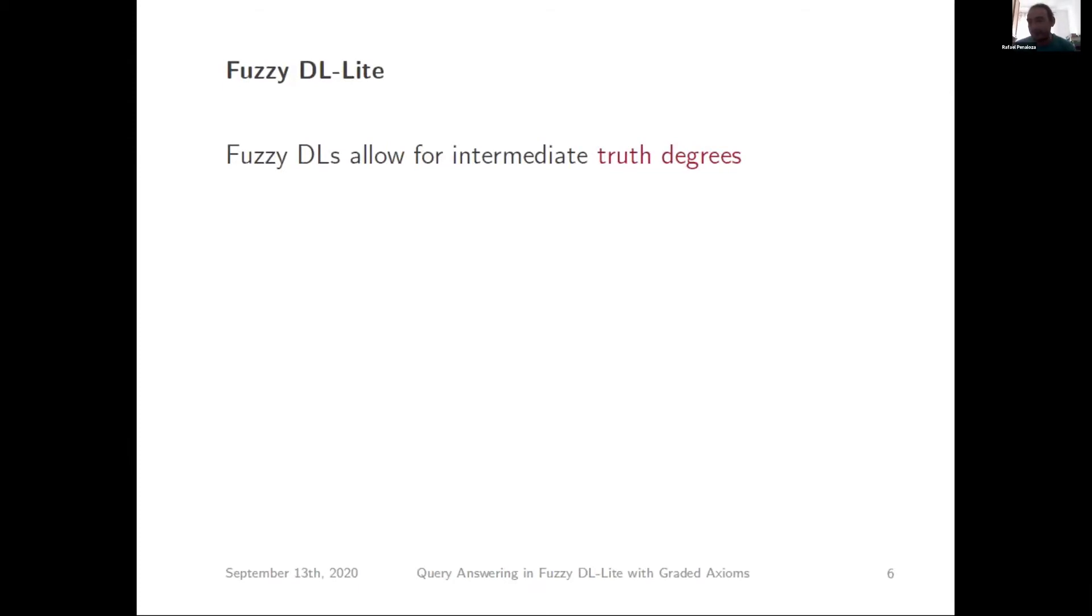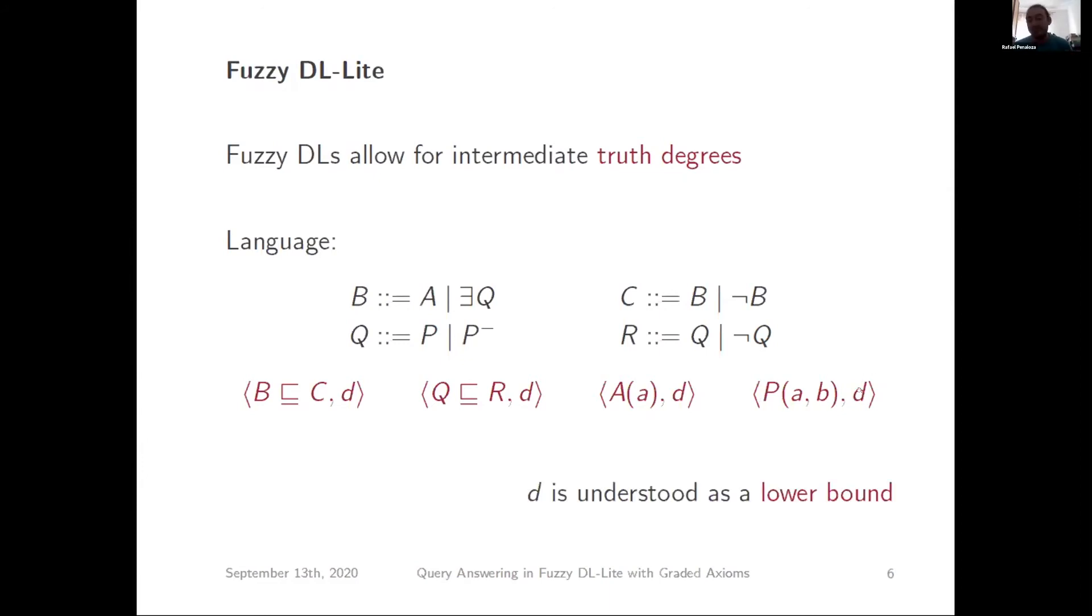When we started thinking about this, I immediately thought everything has been fuzzified already. But it turned out that it hasn't. I'll just introduce very fast what is this fuzzy DL-Lite that we're dealing with. It's just the fuzzy variant of DL-Lite R. Essentially every GCI, every inclusion that we have in DL-Lite R is associated with a degree, and also each data element, each assertion. A of a and P of a, b are associated with a degree. This degree is understood mainly as a lower bound for how much it belongs to this notion.